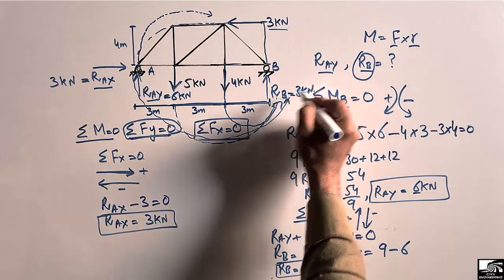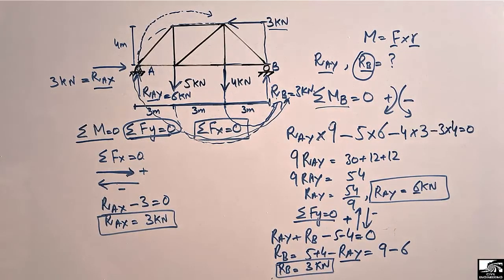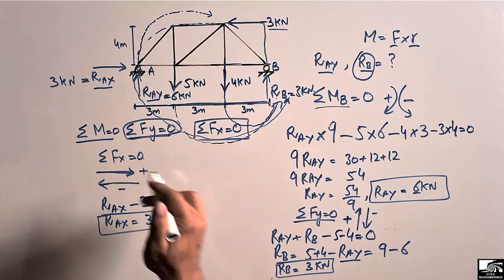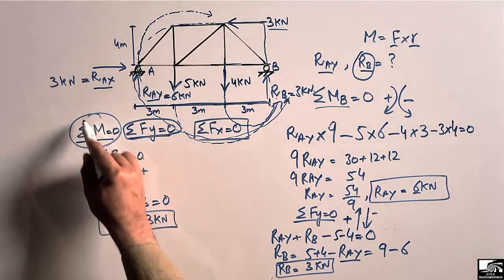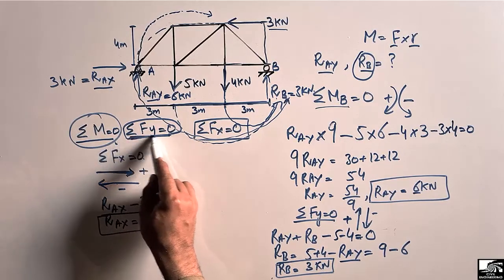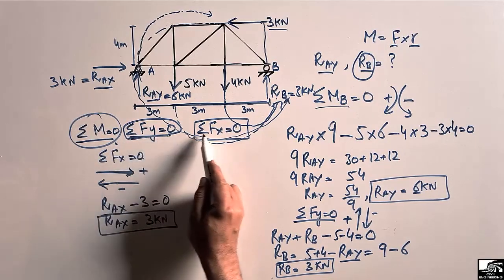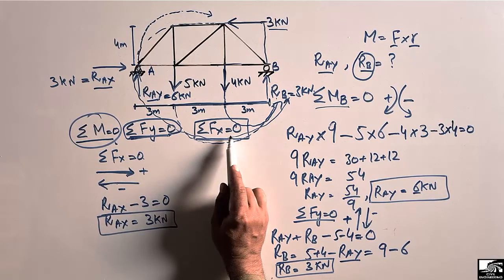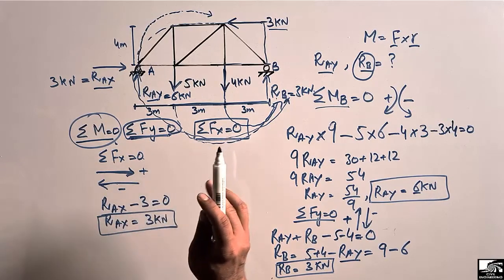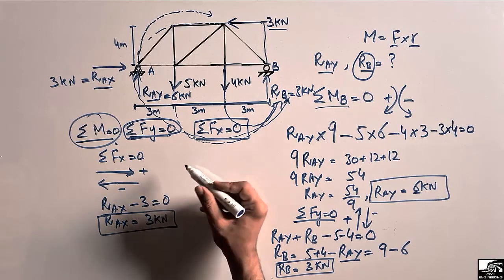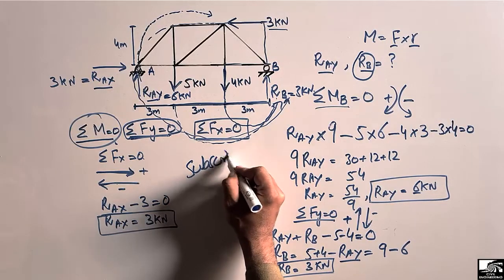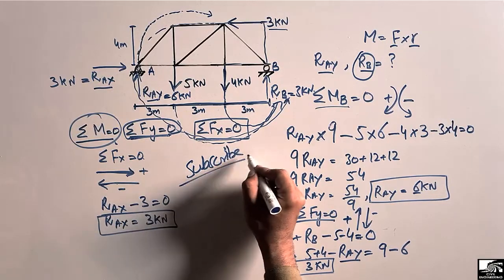This is how to find the support reactions using the three equilibrium equations: summation of moments equal to zero, summation of vertical forces equal to zero, and summation of horizontal forces equal to zero. Hope you understand — don't forget to subscribe for daily civil engineering videos. Thank you for watching.